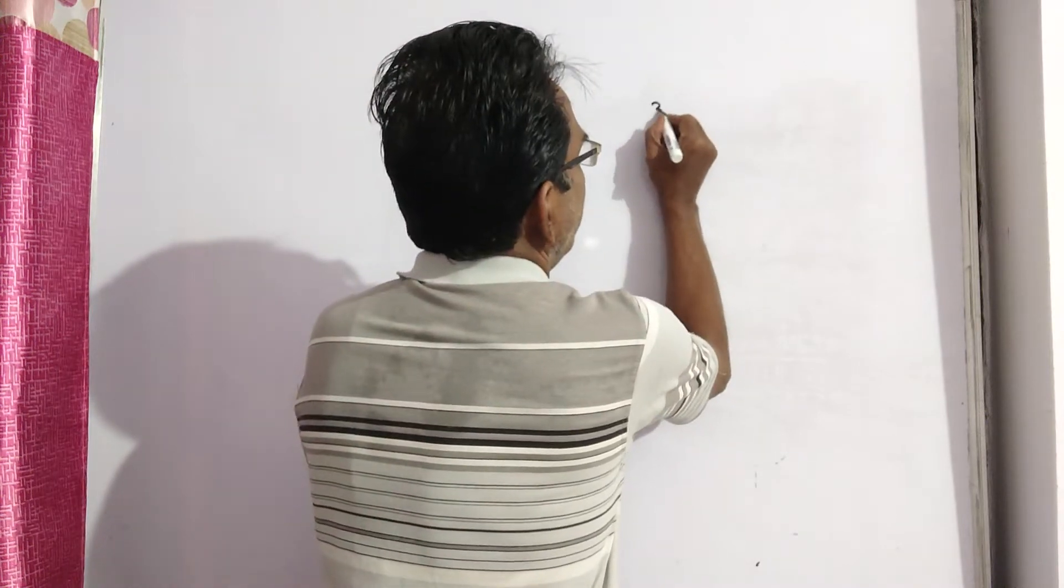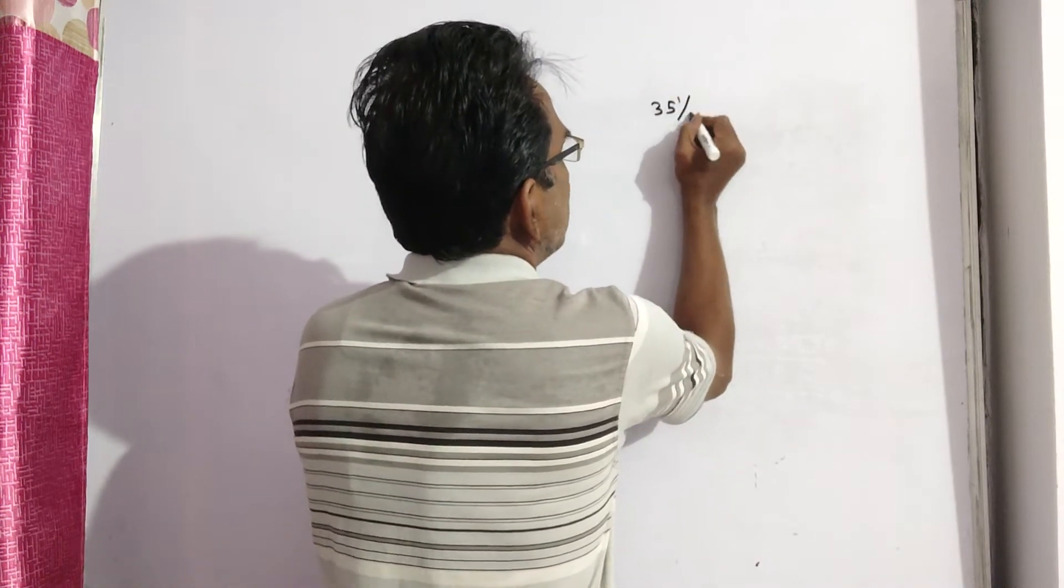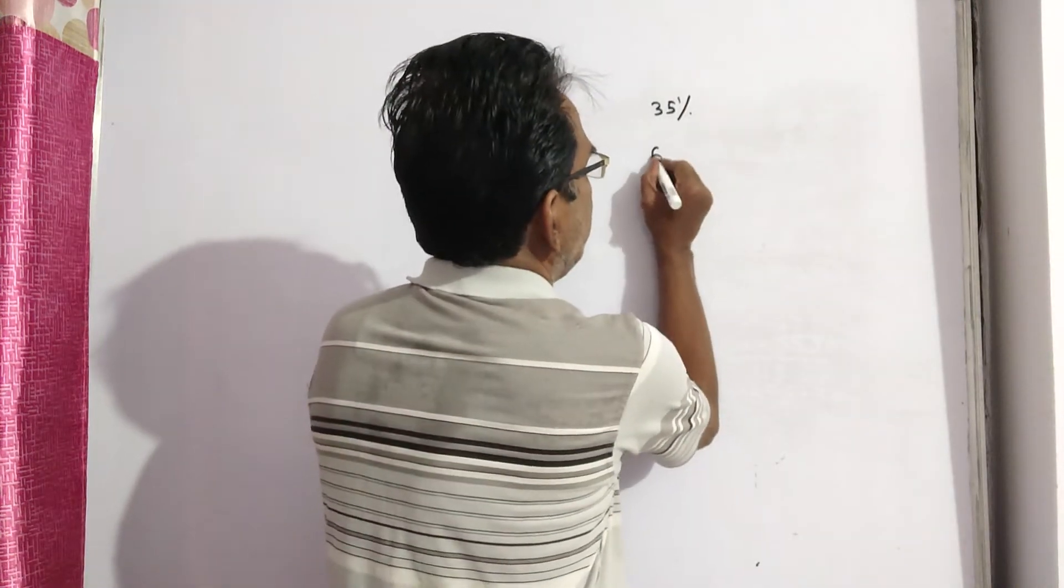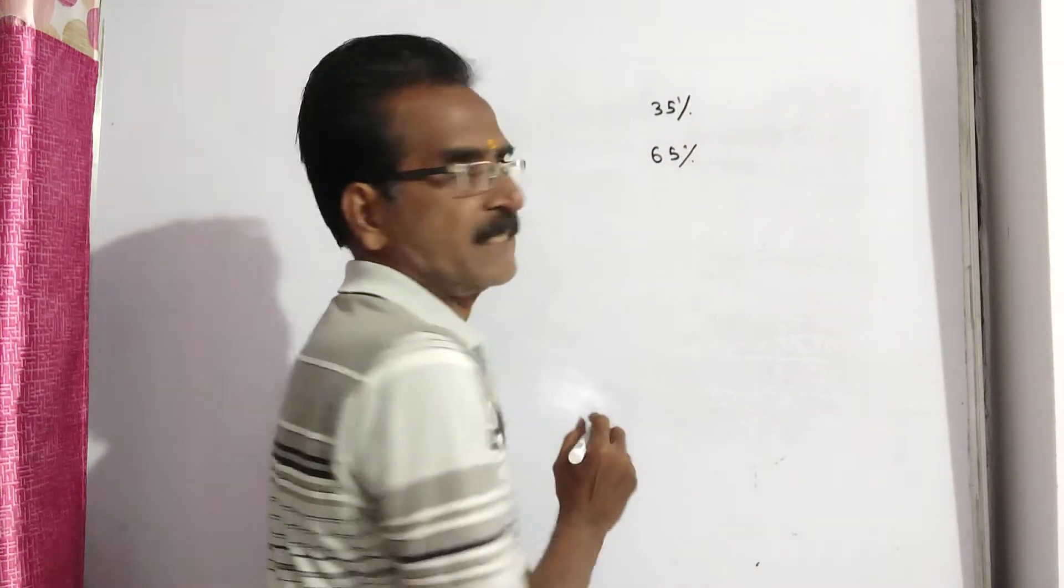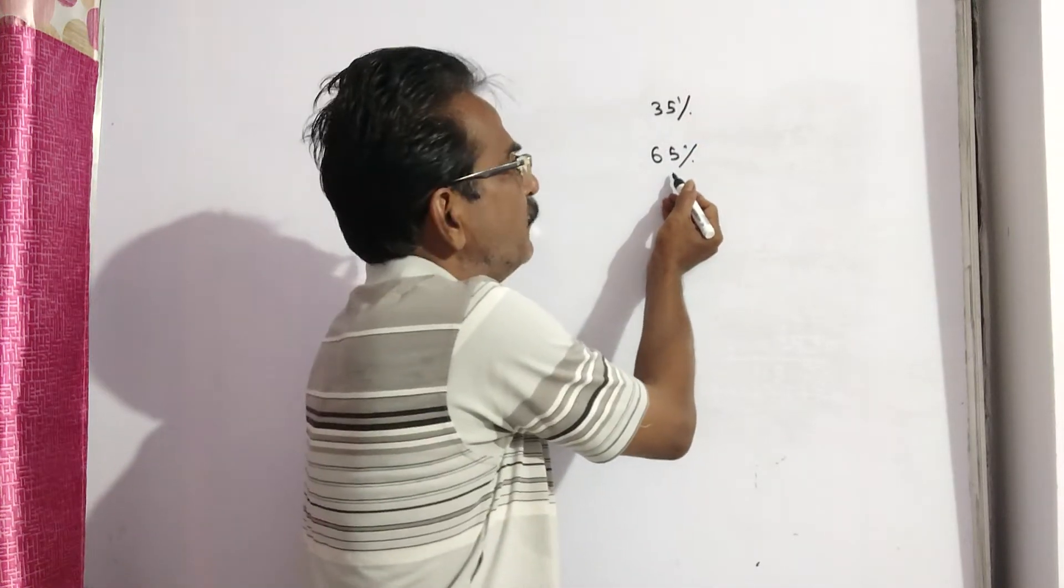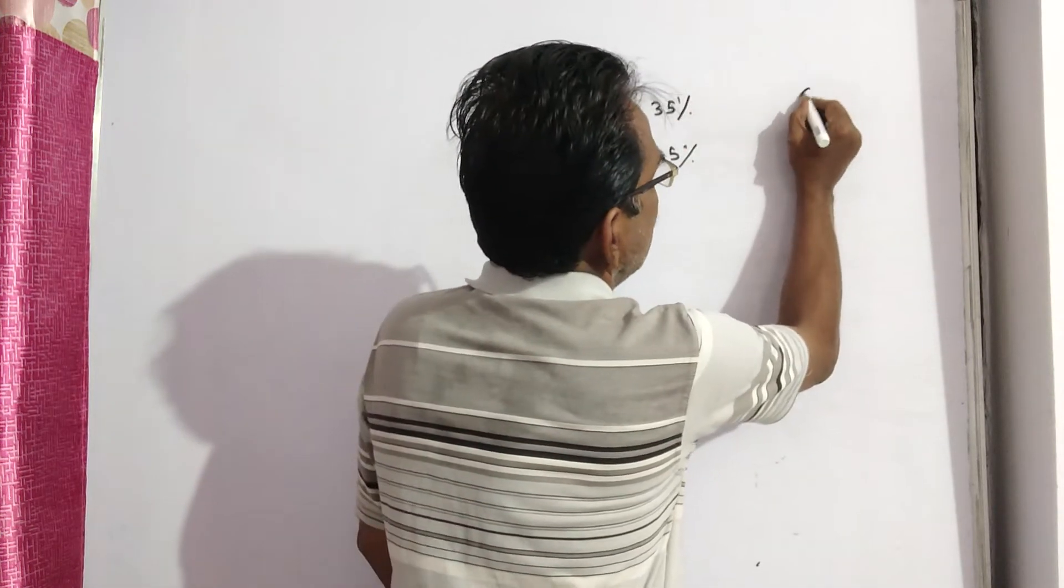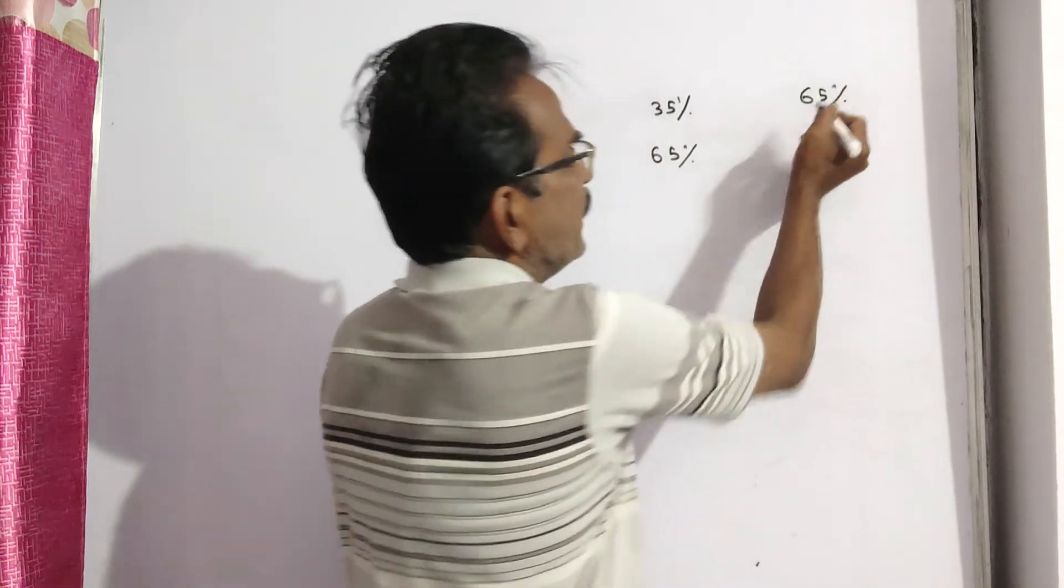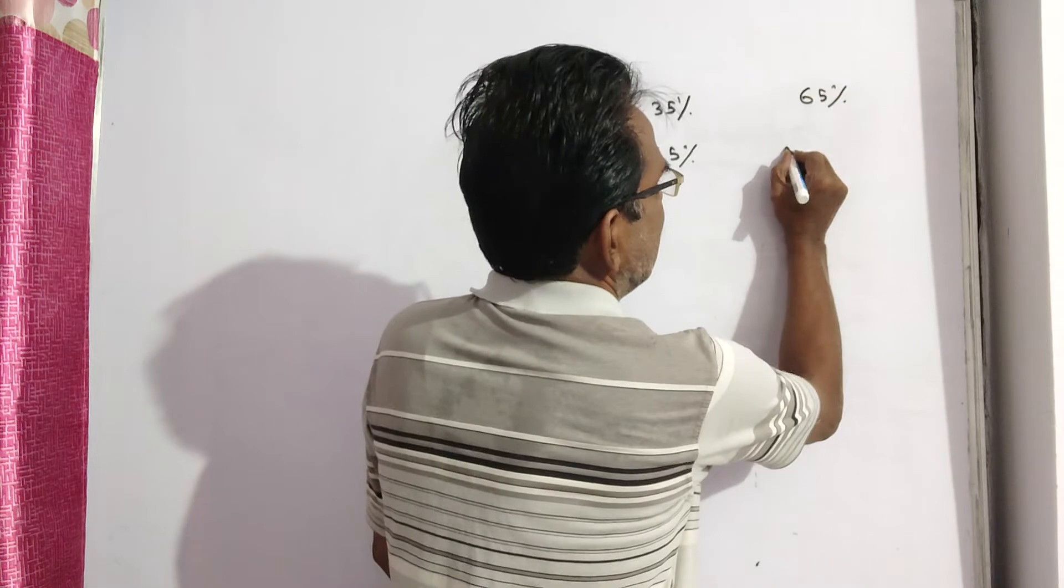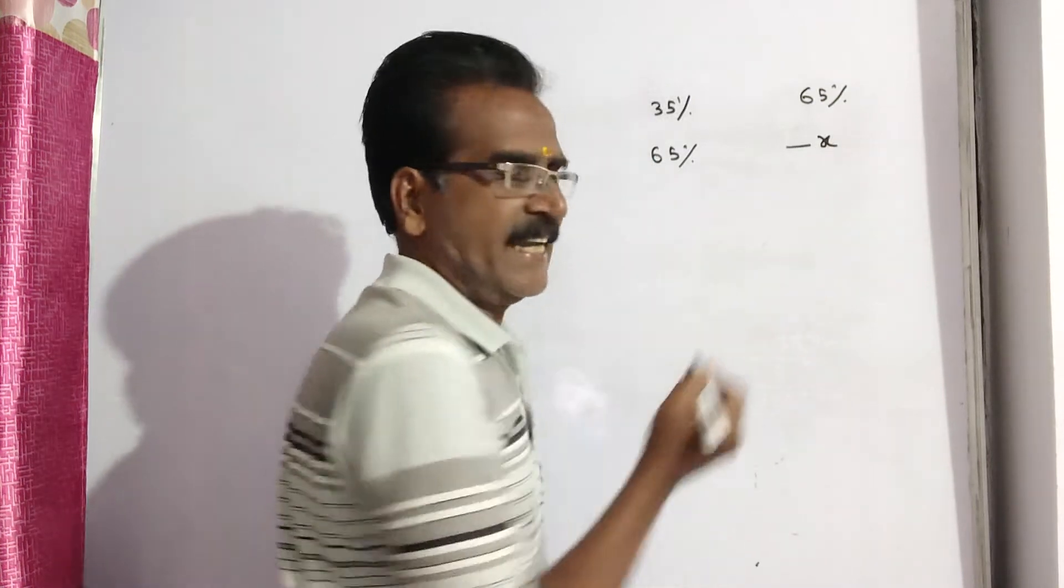See, total 100 goods. 35% of the goods are sold at a profit of 65%. So the remaining goods are 65%. These 65% of the goods were sold at x% loss, so minus x.